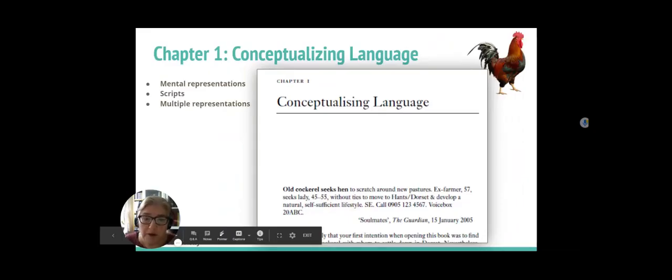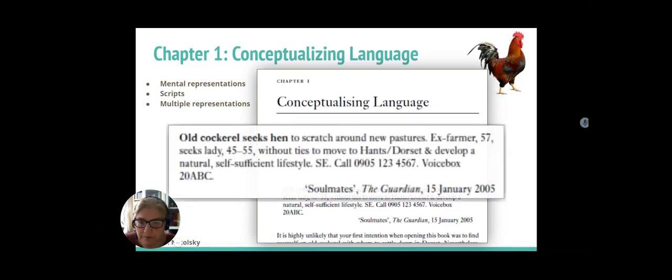The book begins with one of Gavins' favorite text types, judging from the number of such texts in the book, a lonely heart ad. Old cockrell seeks hen to scratch around new pastures. Ex-farmer, 57, seeks lady, 45-55, without ties to move to Hants, Dorset and develop a natural, self-sufficient lifestyle.